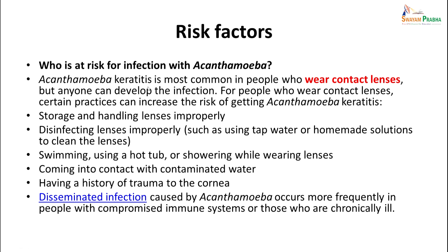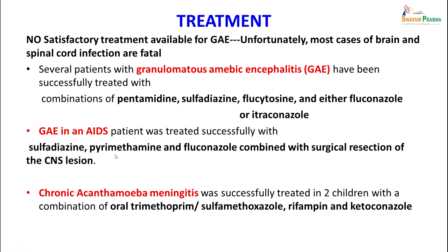Who is at risk? Most people who wear contact lenses can develop infection if they do not take sufficient precautions — improper storage and handling, disinfecting with tap water, swimming while wearing lenses, or having a history of corneal trauma. Disseminated infection occurs mainly in immunocompromised and chronically ill patients. Treatment: no satisfactory treatment is available for GAE, and most cases of brain and spinal cord infection are fatal. Several patients have been successfully treated with combinations of pentamidine, sulfadiazine, flucytosine, and either fluconazole or itraconazole. GAE in an AIDS patient was treated with sulfadiazine, pyrimethamine, fluconazole, and surgical resection of the CNS lesion.